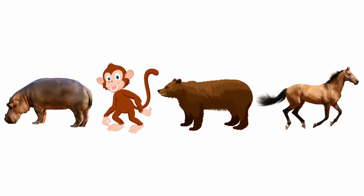Next one, hippopotamus, monkey, bear and horse. Among these four pictures, hippopotamus, monkey and bear are wild animals. But horse is a domestic animal. So, we are going to put a cross for horse.